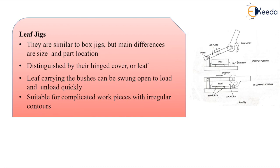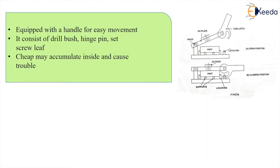Next we have the leaf jig, which is similar to box jigs but distinguished by a hinged cover or leaf. The leaf carries the bushes and can swing open to load and unload quickly. It is suitable for complicated workpieces with irregular contours, and is equipped with a handle for easy movement. It consists of a drill bush, hinge pin, and set screw leaf. The only limitation is that chips may accumulate inside and cause trouble.